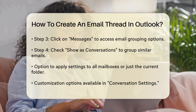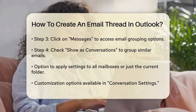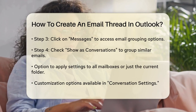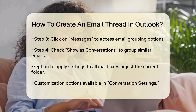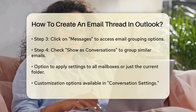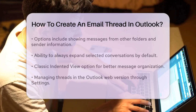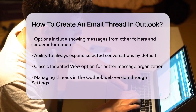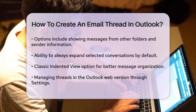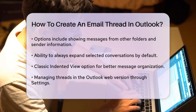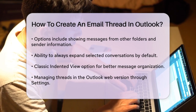If you want to customize how these threads appear, you can do so by clicking on Conversation Settings in the View tab. Here, you have several options. You can choose to show messages from other folders so that similar messages in other folders are included in the conversation. You can select Show Senders Above the Subject to see who is involved in the correspondence at a glance.